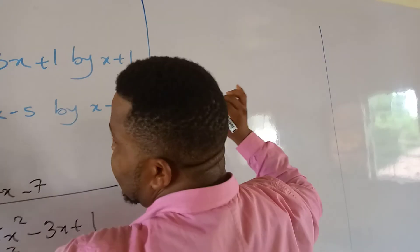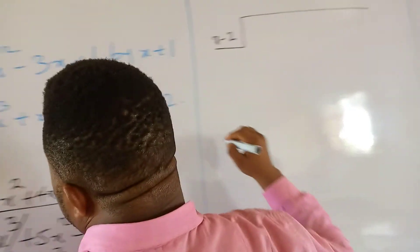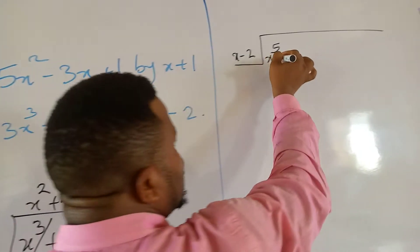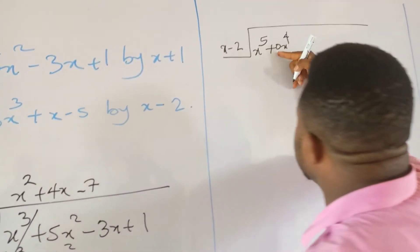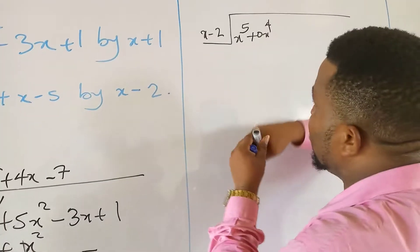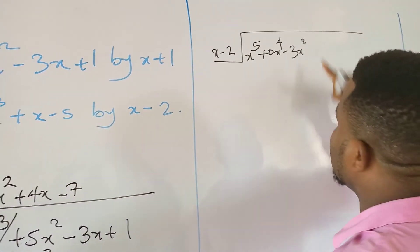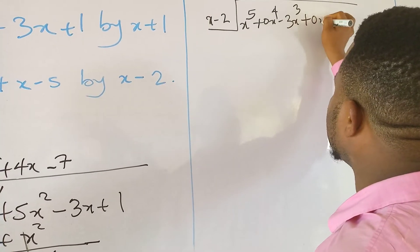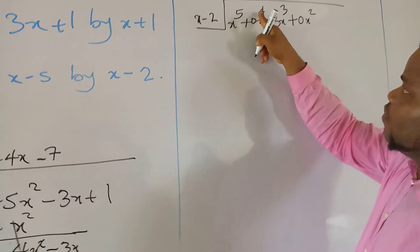The next example is to divide x raised to the power 5 minus 3x cubed plus x minus 5 by x minus 2. After x to the power 5, the next term should be x to the power 4, but it's missing, so we write plus 0x to the power 4. Similarly, after minus 3x cubed, we write 0x squared as a placeholder, so the powers reduce in order from 5, 4, 3, 2, and so on.